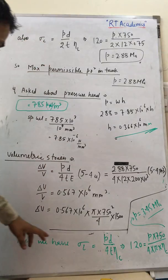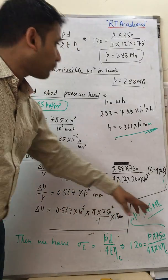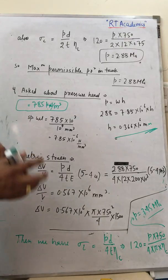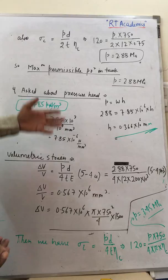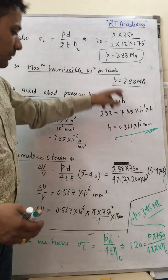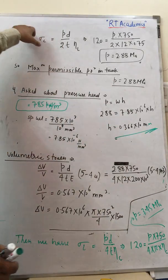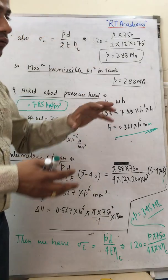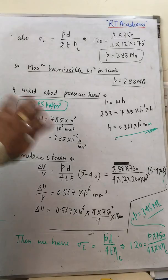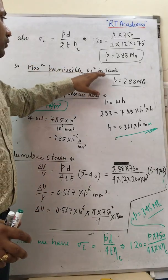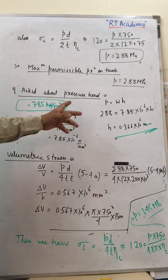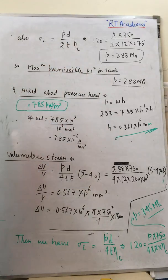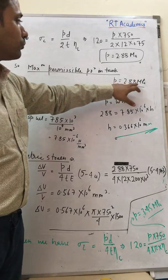Comparing both: for longitudinal stress the pressure is 3.45 MPa, and for circumferential stress it is 2.88 MPa. We cannot provide a pressure exceeding the lower value, so the joint will fail if we exceed 2.88 MPa. Therefore, the safe pressure is p = 2.88 MPa.